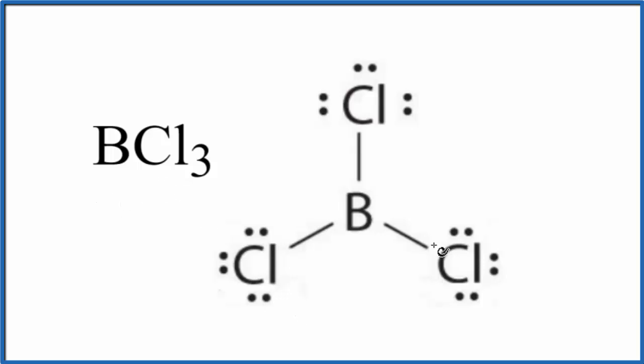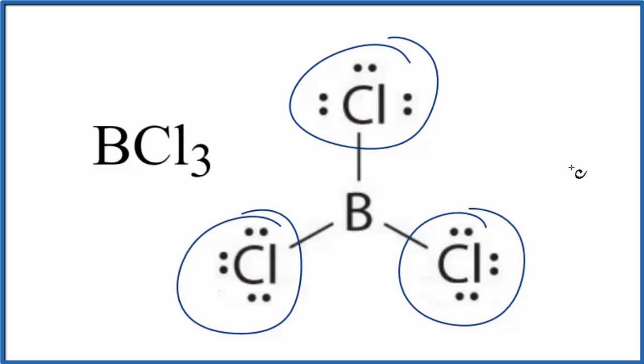For the molecular geometry, we can imagine we have our central boron here, these three chlorine atoms around it, and they're pushing away from each other as far as they can. When they do that, you can kind of visualize that they'll have this molecular geometry, a certain shape. Let's look at that.